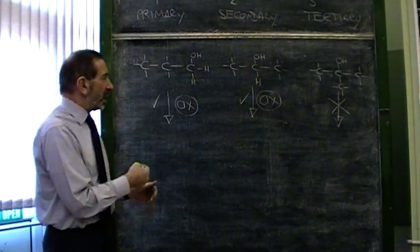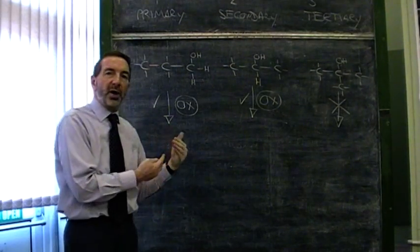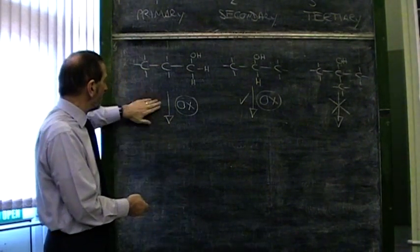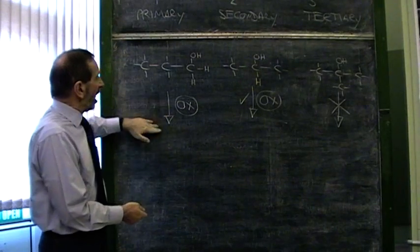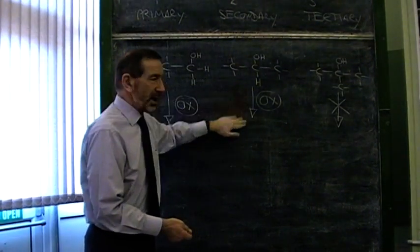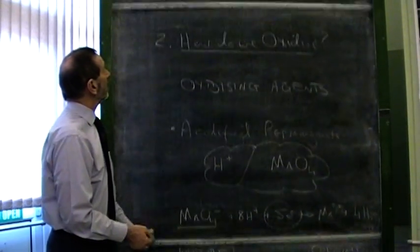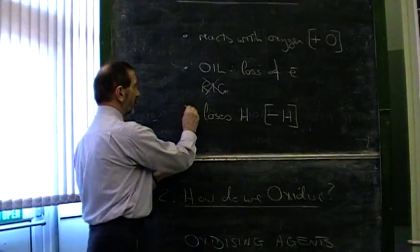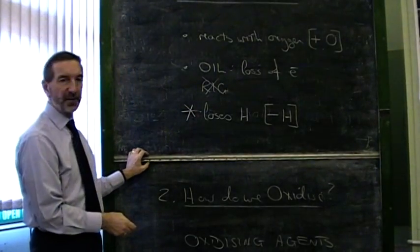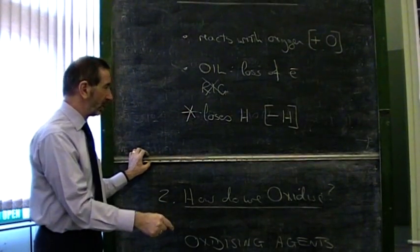Now, what we need to do here, to explain this, is to use one of our other definitions. Remember, we said that oxidation can be losing hydrogen. There were three definitions. We would say that loss of hydrogen was one definition. We can use this definition to explain what's happening.